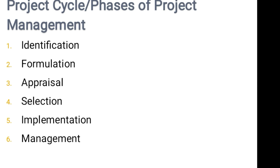Let us discuss all the five phases in brief. The first stage is project identification. Project identification is the first step of a new venture. It is concerned with collection, compilation, and analysis of economic data for the eventual purpose of locating possible opportunities for investment and with the development of such opportunities. The project idea is the user-friendly concept of what a project should be like.